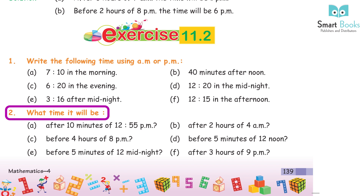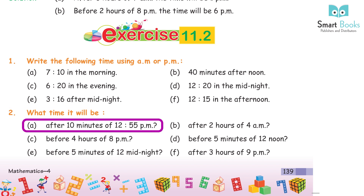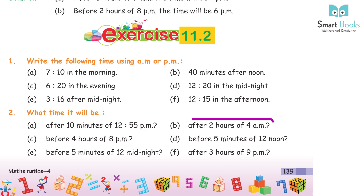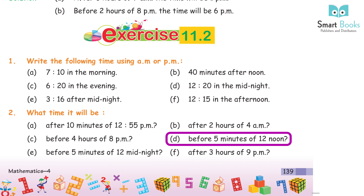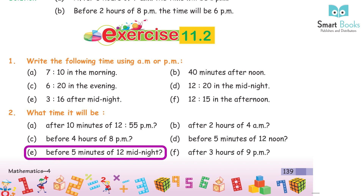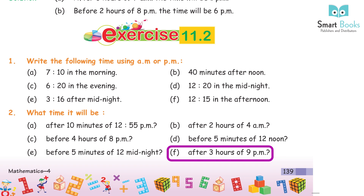Question 2: What time will it be? A. After 10 minutes of 12:15 PM — 12:25 PM. B. After 2 hours of 4 PM — 6 PM. C. Before 4 hours of 8 PM — 4 PM. D. Before 5 minutes of 12 noon — 11:55 AM. E. Before 5 minutes of 12 midnight — 11:55 PM. F. After 3 hours of 9 PM — 12 AM.